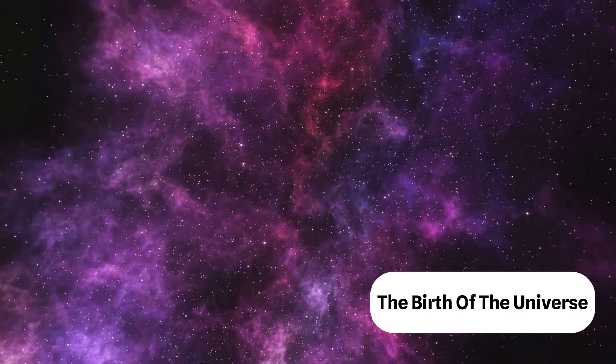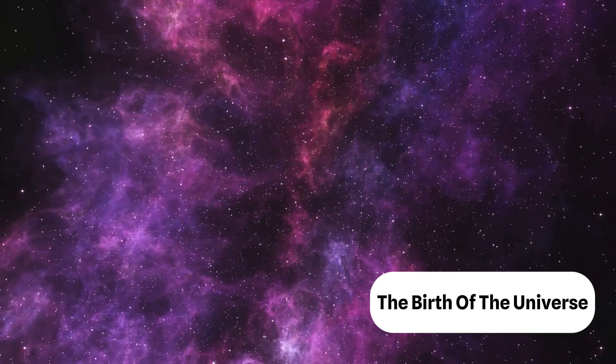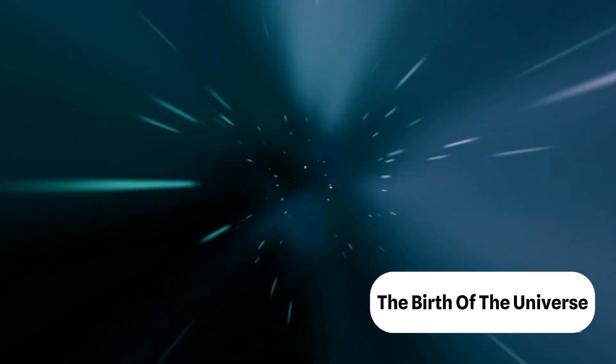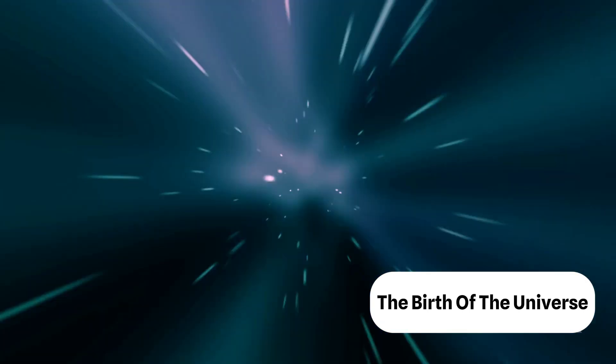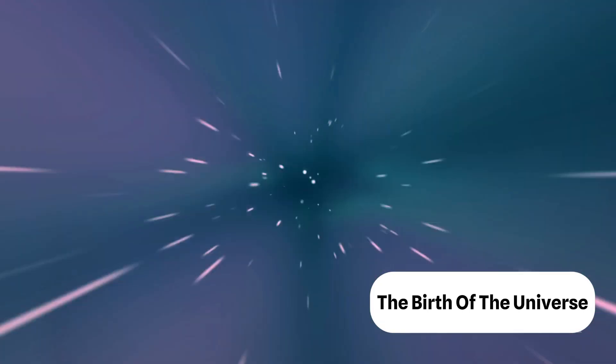Then, about 300,000 years after the Big Bang, the universe cooled down enough for electrons to combine with these nuclei to form neutral atoms. This process allowed light to travel freely for the first time, creating a flash that we now detect as the cosmic microwave background radiation.